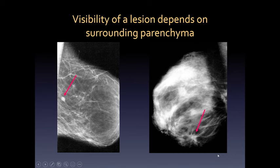The visibility of a lesion really does depend on the surrounding parenchyma. In a woman with a fatty-replaced breast, as in this patient on the left, you can see very easily a very small cancer, whereas in a patient with more dense breast tissue, it is more difficult to appreciate the cancer, although it is detected here with a spiculated breast lesion.